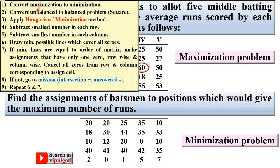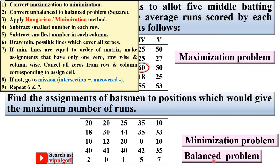The next step is to convert an unbalanced problem to a balanced problem. Here there are five batsmen and five positions, so it is called a square problem — meaning it is already a balanced problem. The next step is to apply the Hungarian method, also called the minimization method, and for that subtract the smallest number in each row.